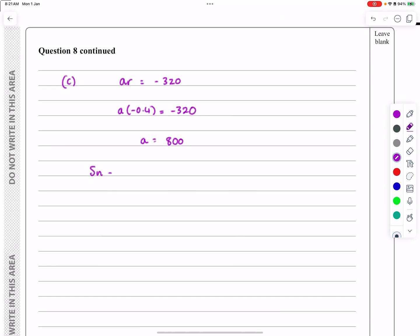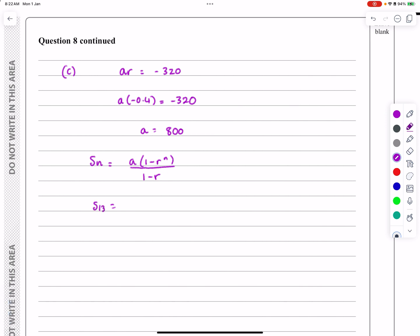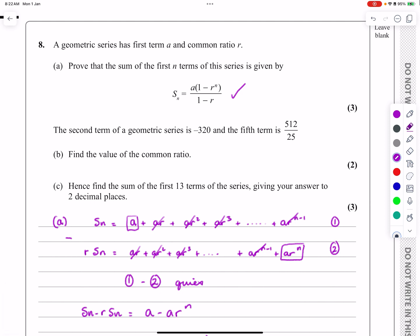So now the sum of n terms is a times 1 minus r to the n all over 1 minus r. The sum of the first 13 terms is going to be 800 times 1 minus minus 0.4 to the 13 all divided by 1 minus minus 0.4. Just stick it all into the calculator, and the sum works out to be 571.43. Go back and just check, it said to two decimal places, so make sure you do that. So relatively straightforward for a geometric question, hopefully that all makes sense.